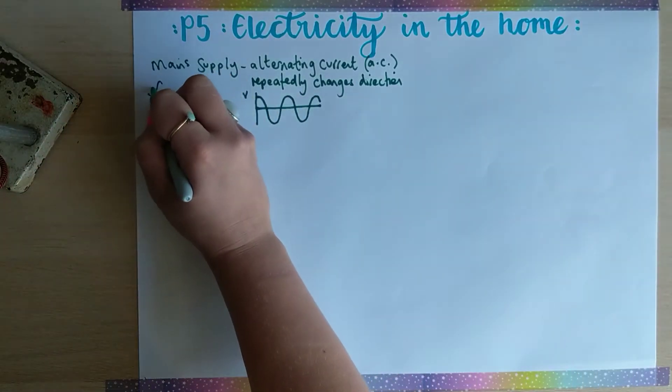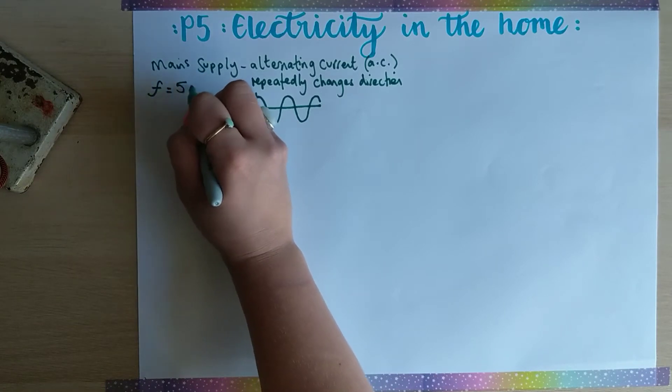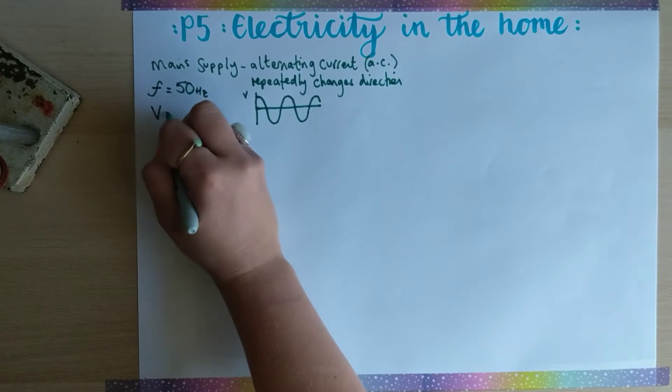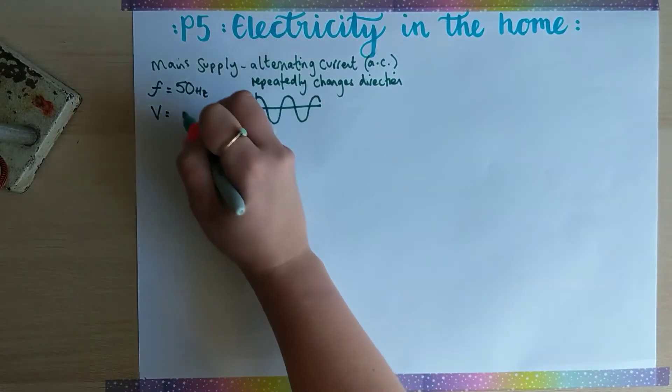The frequency of the UK mains supply is 50 hertz and the potential difference is equivalent to 230 volts.